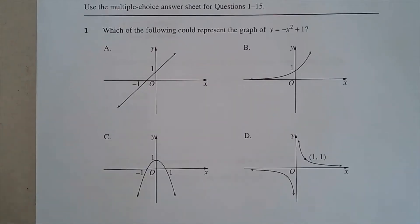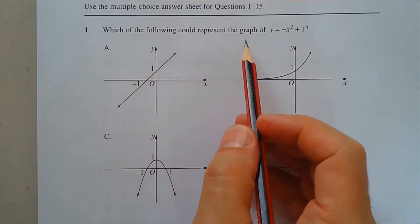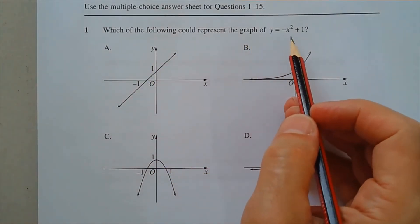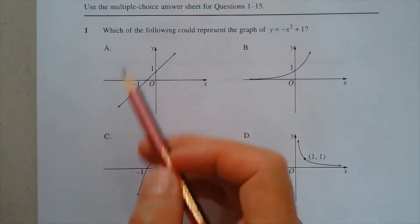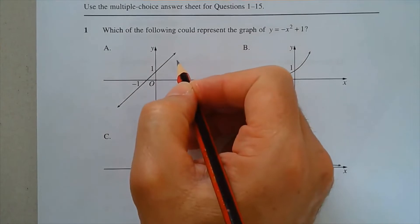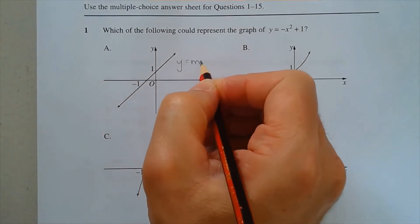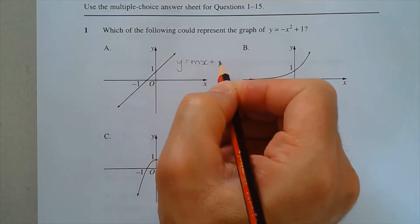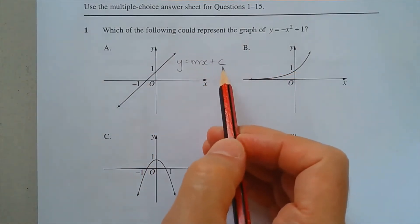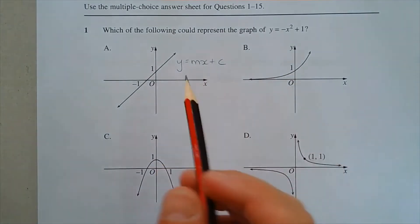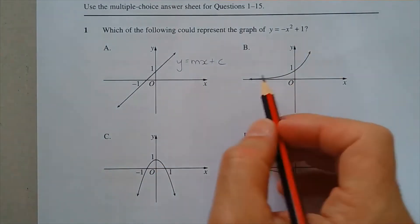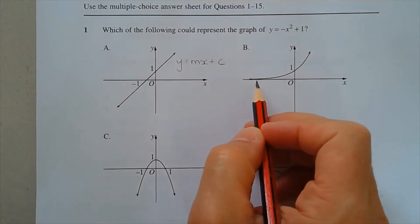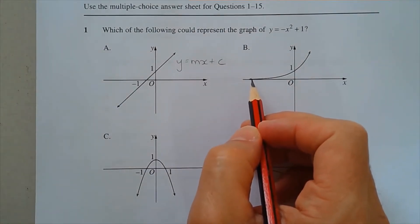Question 1. Which of the following could represent the graph of y equals negative x squared plus 1? Option A is a straight line in the form y equals mx plus c. Option B is an exponential function rising sharply on the right, of the form y equals a to the power of x where a is greater than 1.